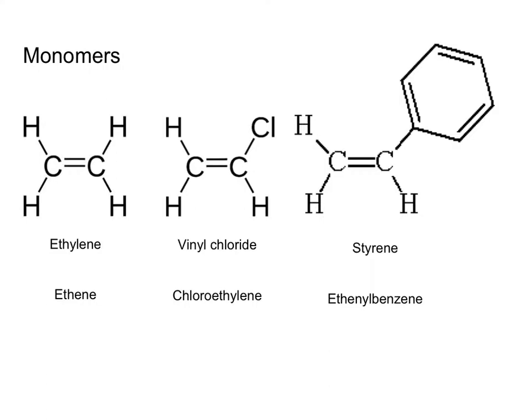Any discussion of polymers must discuss the building blocks that make up polymers — these are monomers. These are small molecules that contain functional groups such as a double bond, shown just here in ethylene. In the HSC course, in this first section, we are going to focus on three monomers: ethylene, vinyl chloride, and styrene. Each of those names are the old names for those monomers. Ethylene is also known as ethene, which is how you will have encountered that molecule in Year 11 Chemistry. Vinyl chloride is known as chloroethene, and styrene is known as ethenylbenzene. Both of those names have shown up in past HSC questions, so you will need to know both names for each of these monomers.